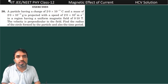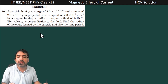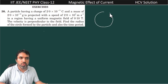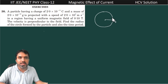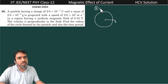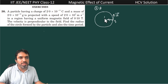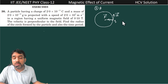Whenever any charged particle moves in a perpendicular magnetic field, it will definitely move on a circular path. The magnetic force acts on the particle moving with velocity v when magnetic field is present inside the page. This magnetic force is perpendicular to the velocity — this is the velocity vector and this is the force vector, which is always perpendicular to the velocity.